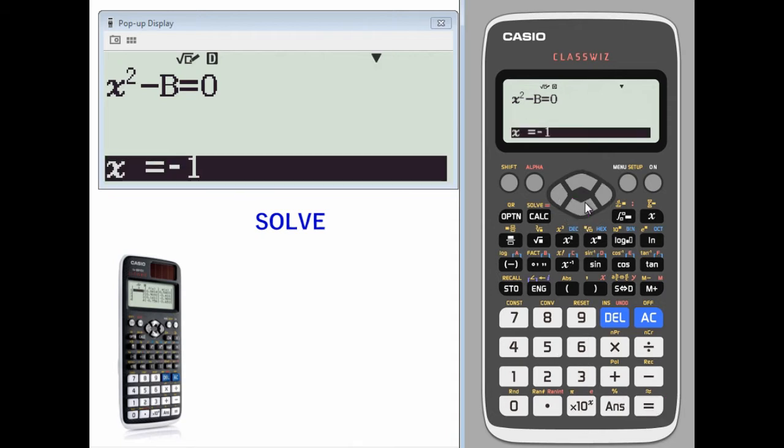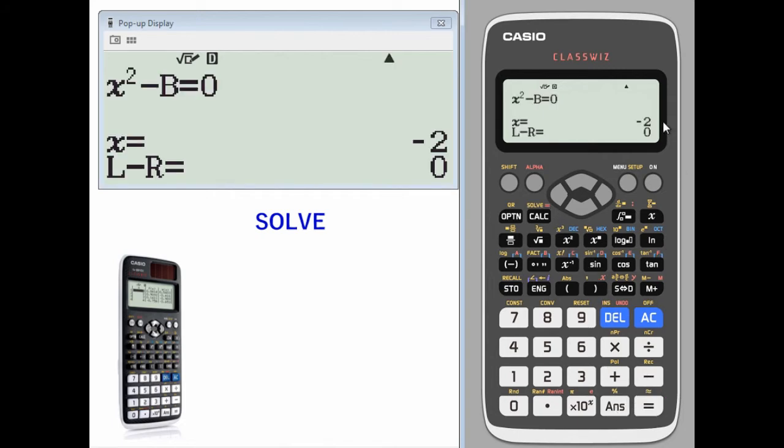We want to solve for x, so we toggle back to the x value and press execute or equals to get our solution of negative two.